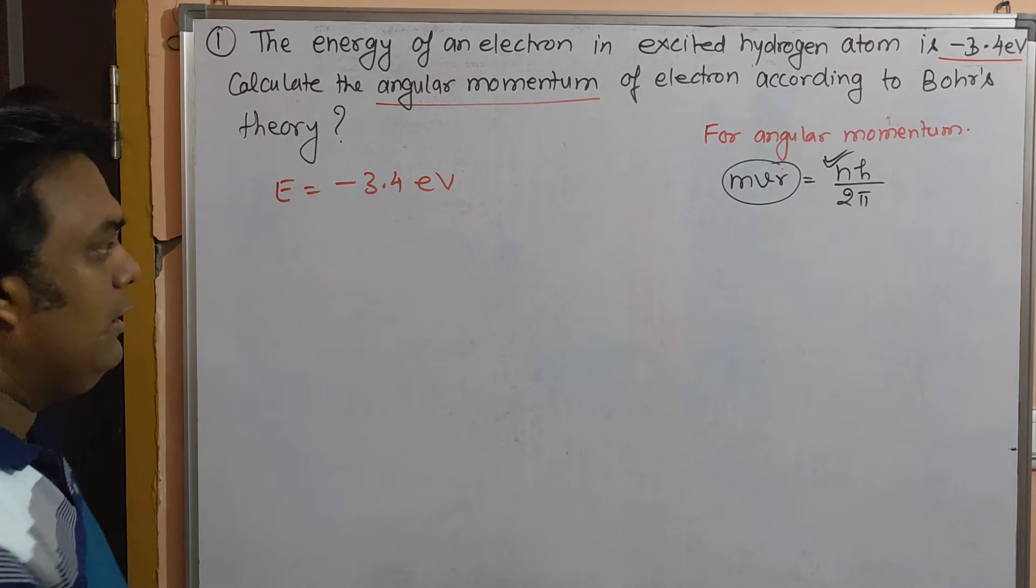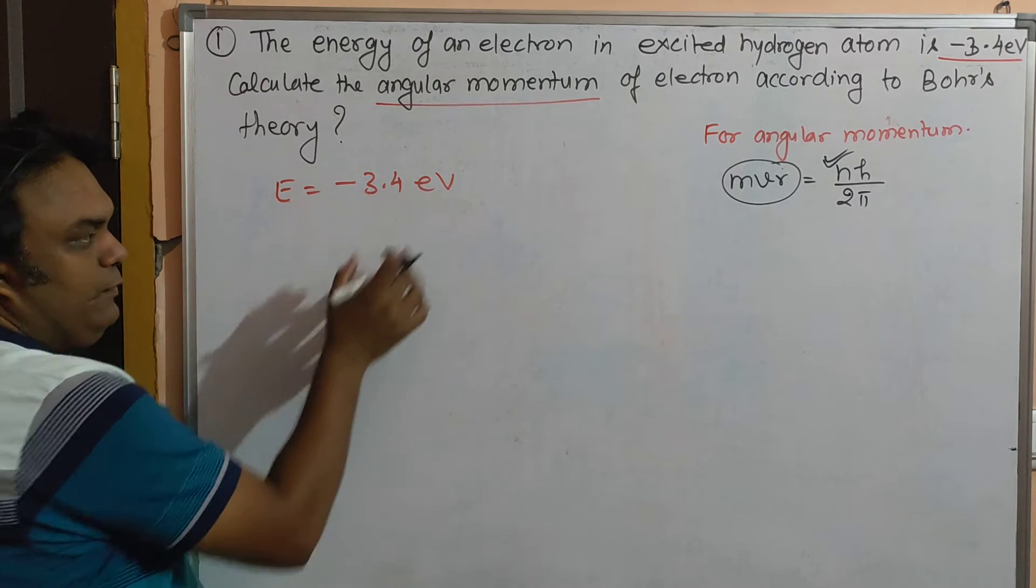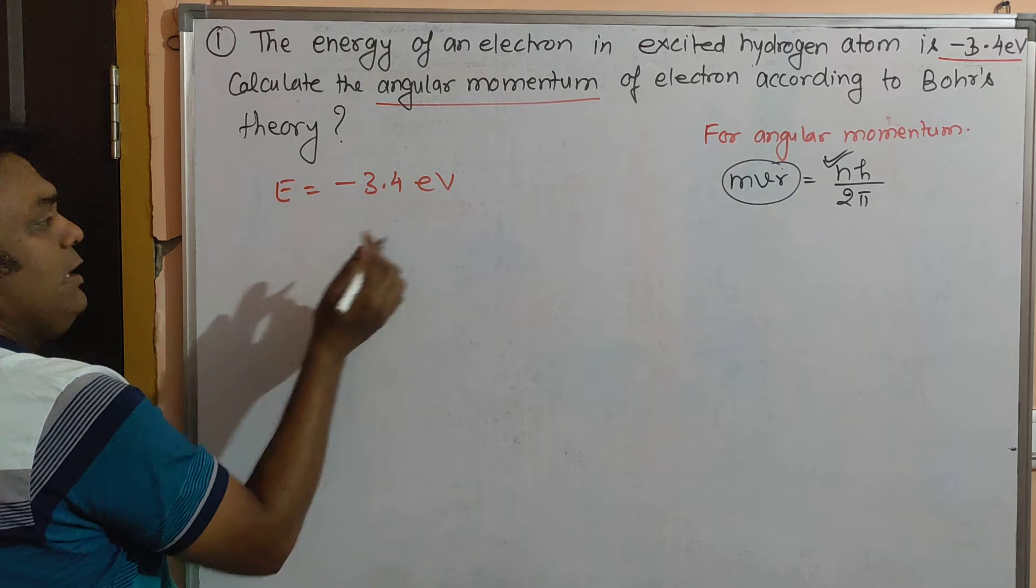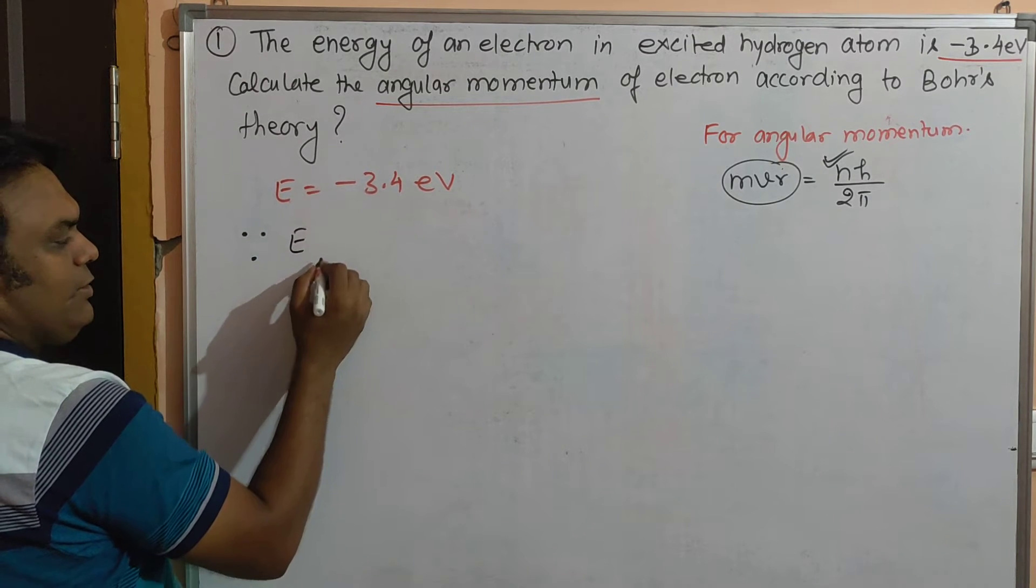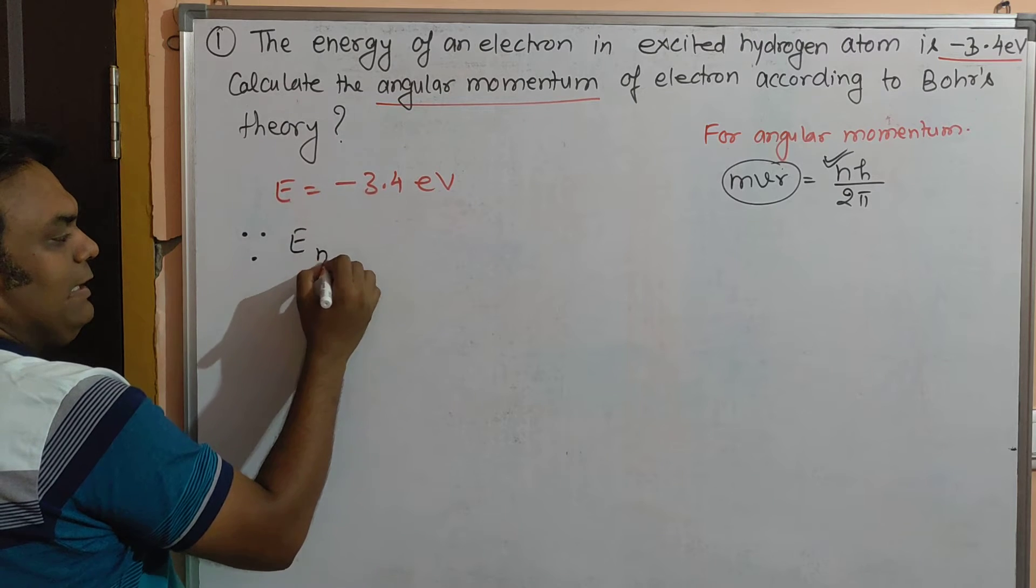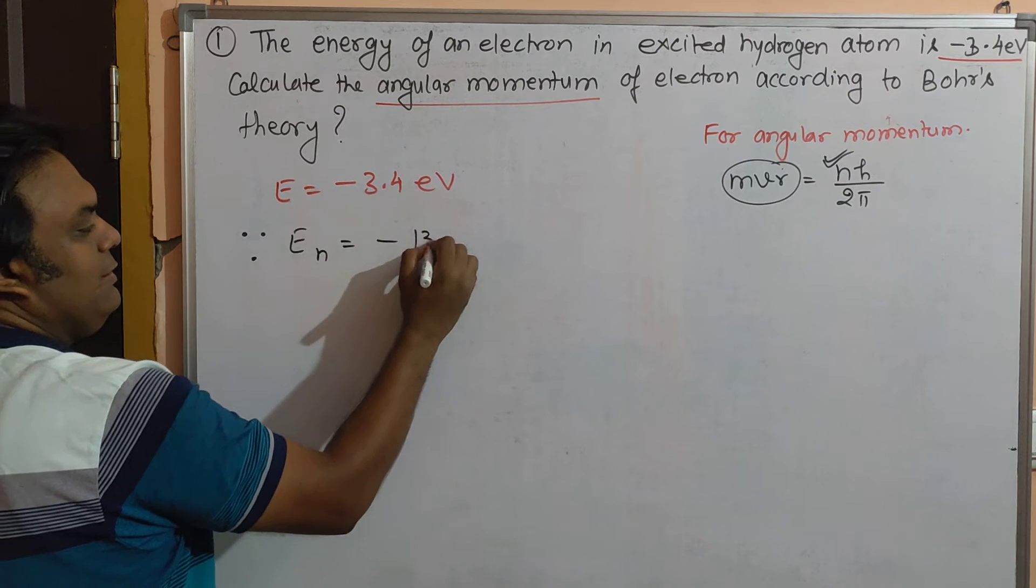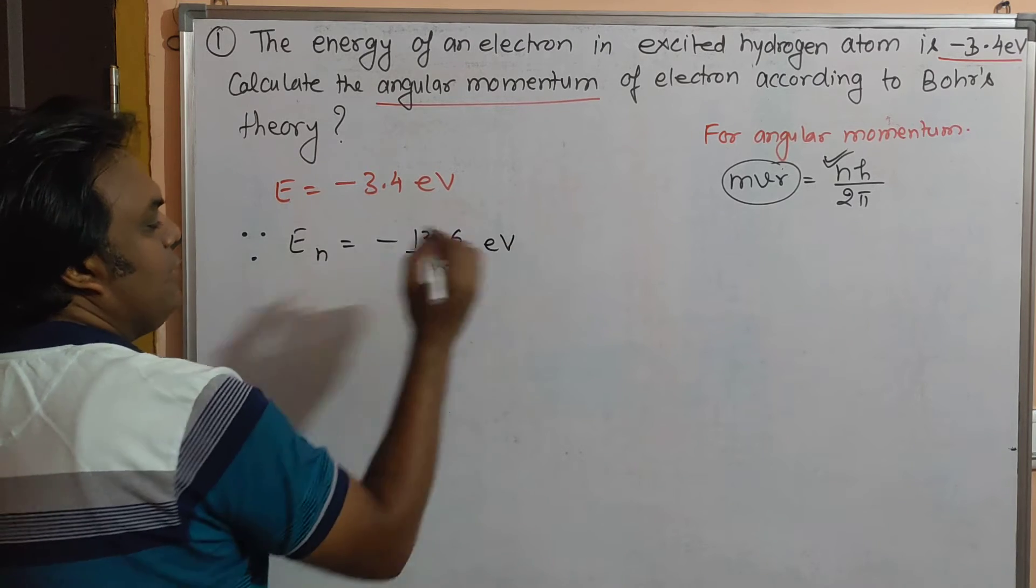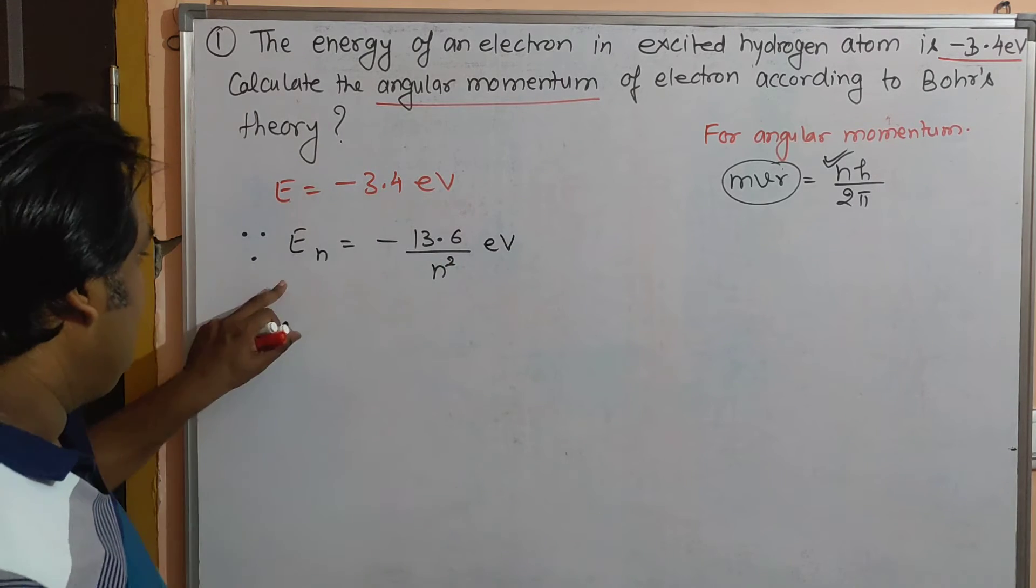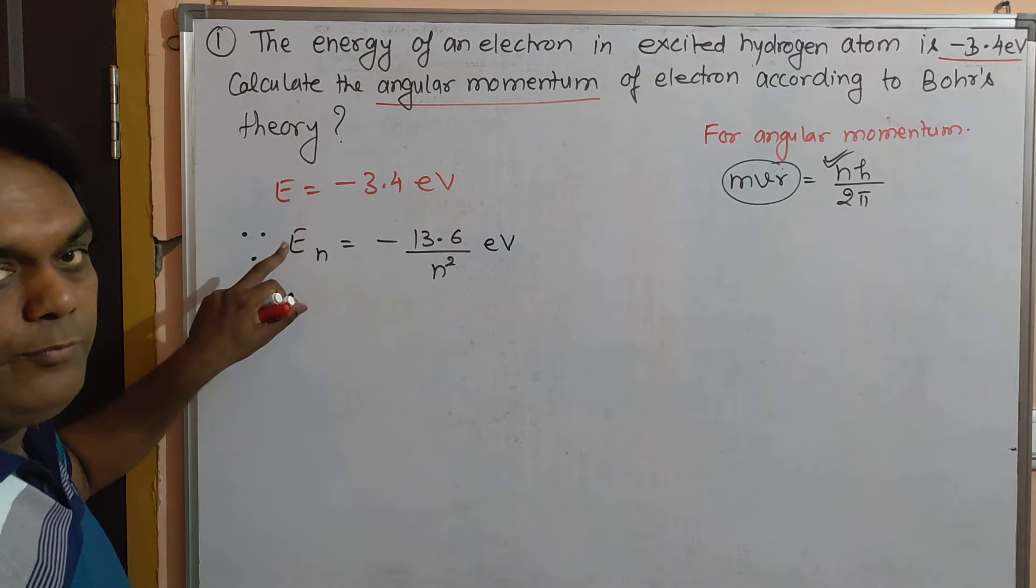The energy of the electron is given. The formula we have for energy of an electron in a hydrogen atom is En = -13.6 upon n² in electron volts. This formula gives us the energy of any orbit in the hydrogen atom.